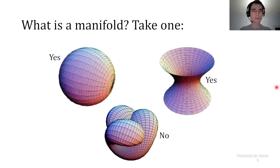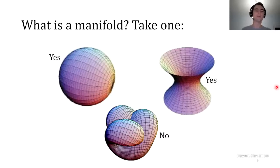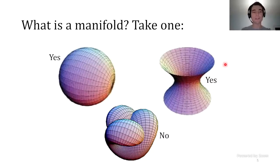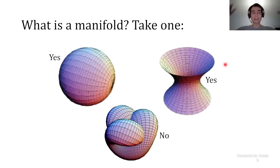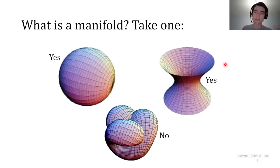A first, simplistic take on what is a manifold would simply be to look at a few examples and non-examples and see what they're like. I claim that these two surfaces in R^3 are manifolds—in fact, they are smooth submanifolds of R^3. R^3 is the embedding space, and inside of that embedding space there's a subset: on one hand a sphere, on the other hand a kind of a hyperbolic shape. I claim that these things are smooth.